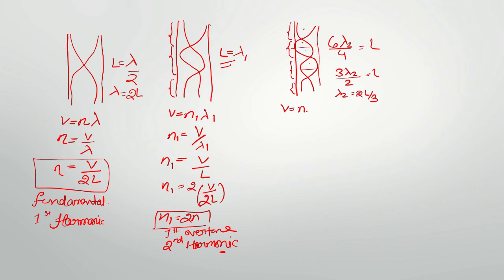Again, V equals N2 lambda 2. So N2 equals V by lambda 2. V as it is, lambda is 2L by 3. And now this can be written as 3 times of your fundamental. Fundamental is V by 2L. So this will be your second overtone. And harmonic, simply third harmonic, because 3 times fundamental.